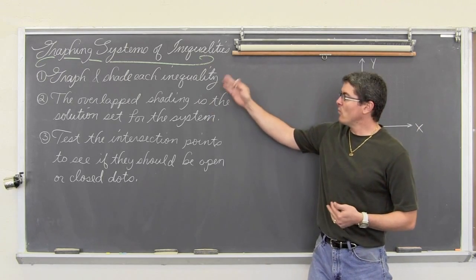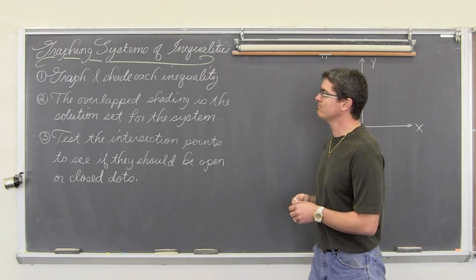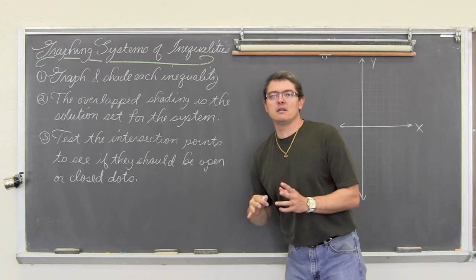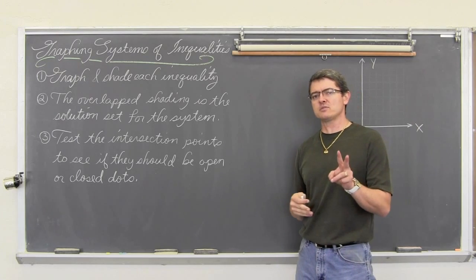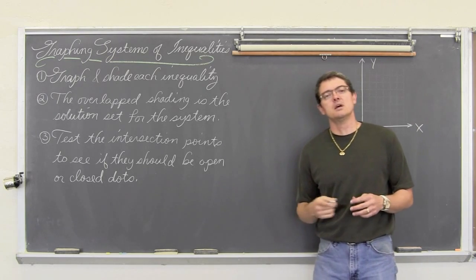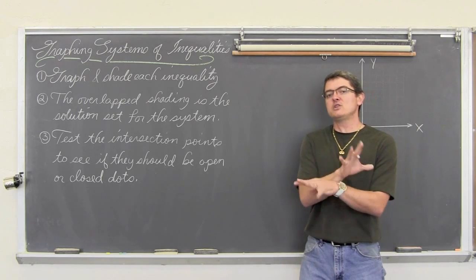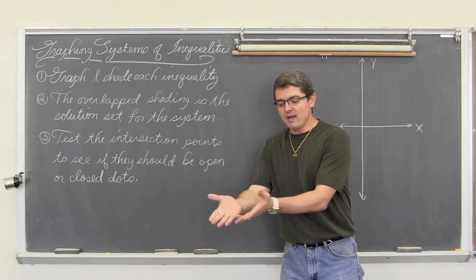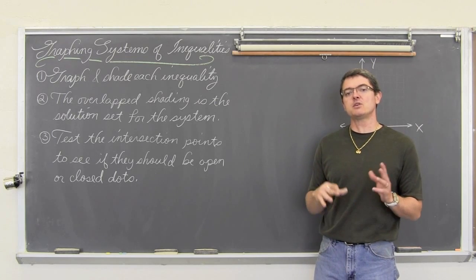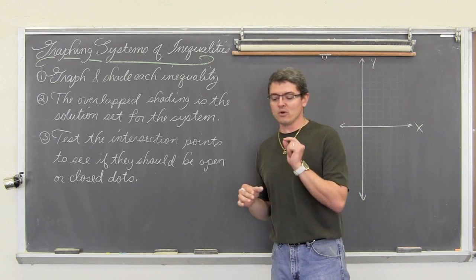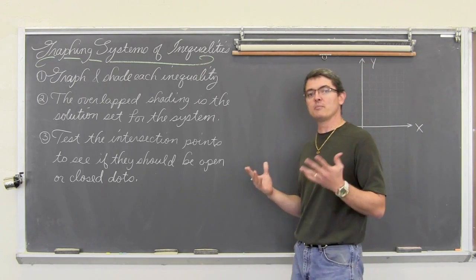So how do you do this? First, you graph and shade each of the inequalities just like they are a separate question, but put them on the same x and y axis. The area that has all of the overlapped shading — whether you have two, three, or four inequalities — is going to describe the actual solution set to your system of inequalities. If you pick a point within that overlapped area, it should make every inequality in your system true, or be a solution for them.